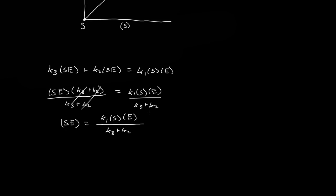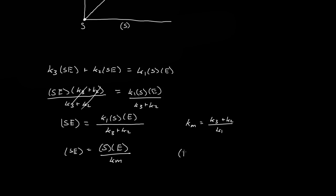We define a new constant Km, where Km equals (K2 + K3) divided by K1. Plugging that in, the concentration of SE equals the concentration of S times the concentration of E, all divided by Km. Now the concentration of the free enzyme E equals the initial concentration of enzyme E₀ minus the concentration of enzymes in the enzyme complex SE.